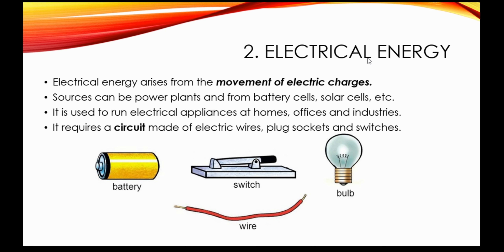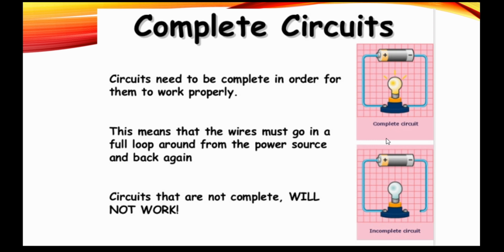Now let's look at electrical energy. Electrical energy arises because of the movement of electrical charges. We saw that electrostatic force is generated by the collection of electrical charges that do not move, but when these charges move it becomes electrical energy — the energy we use when we switch on a bulb, fan, or any electrical appliance. Electrical energy requires a complete circuit made of electric wires, plugs, sockets, and switches. The wires must go in a full loop from the power source and back again — circuits that are not complete will not work.